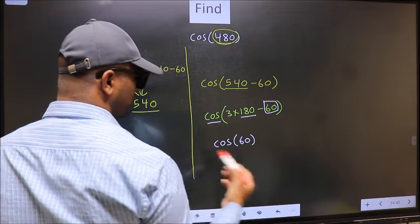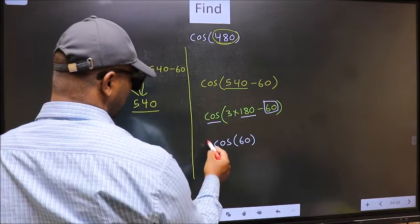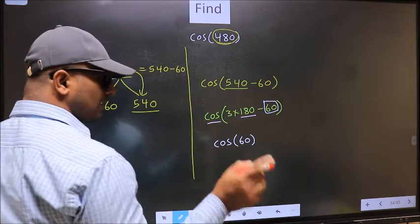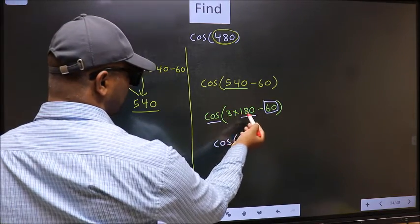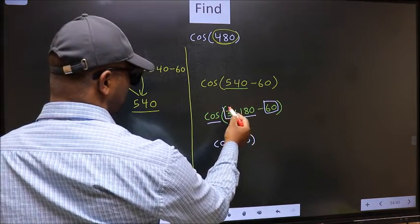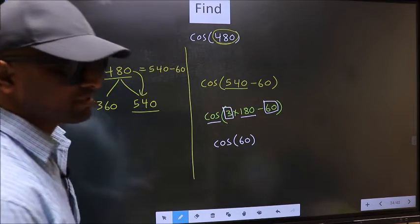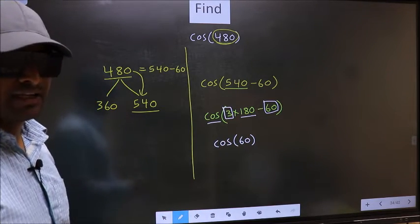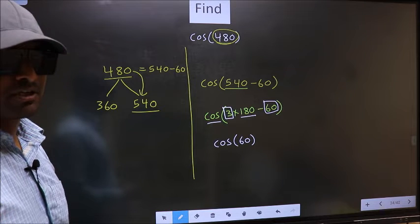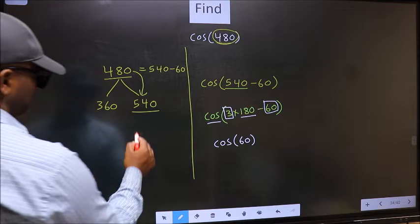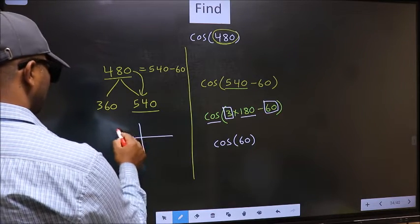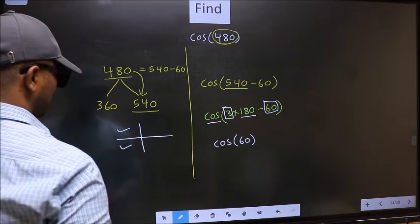Now the question is, will we get here plus or minus? To answer that, we should look at the number before 180. That is 3. And 3 is odd. And all the odd multiples of 180, they lie in either the second or the third quadrant.